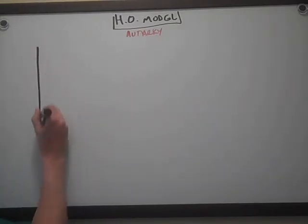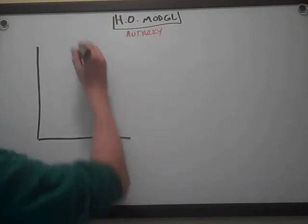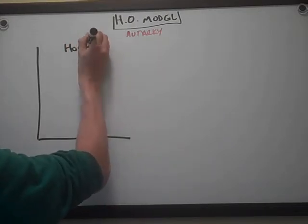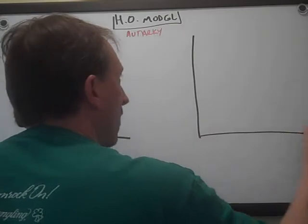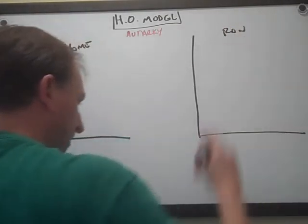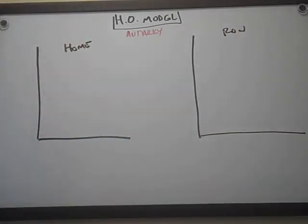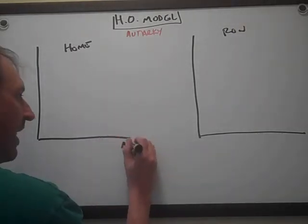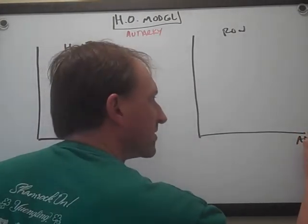Let's set up our two countries. We got home on this side, and we can put home there, and row on this side. I'll put row there and remove these skateboards. Then I can put apples on this axis and this is row apples, and then oranges here and oranges here.